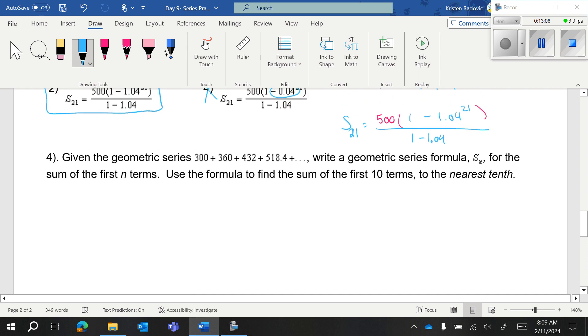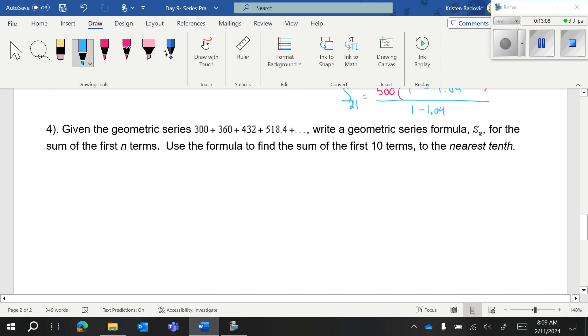We got two more. So given the geometric series, they want the geometric series formula. So we have the formula is S sub N equals A sub 1 minus A sub 1 R to the N over 1 minus R. They want the sum of the first N terms. So we're going to leave N alone. A sub 1 is 300. Now you need to figure out what is r. You need to figure out r. So you're going to go backwards.